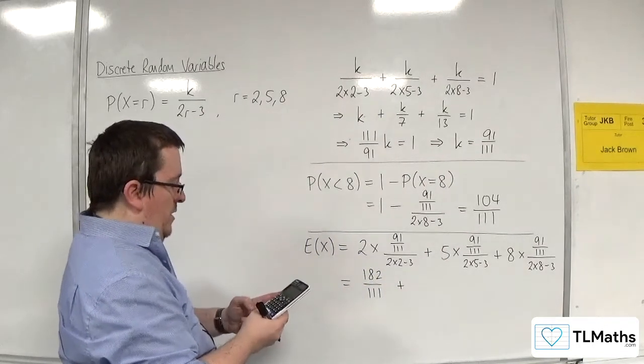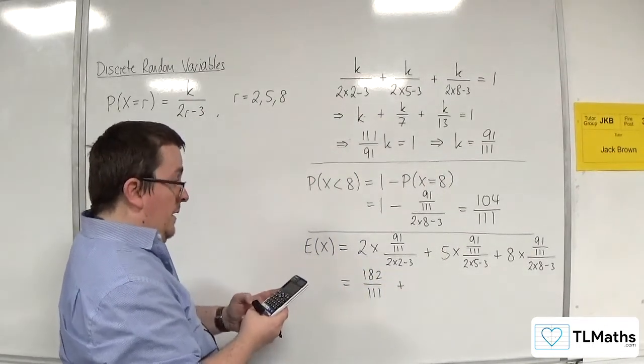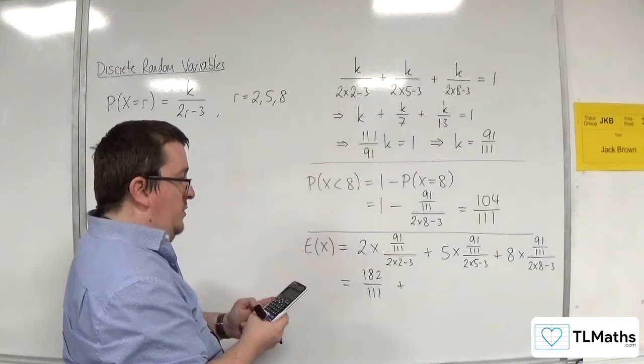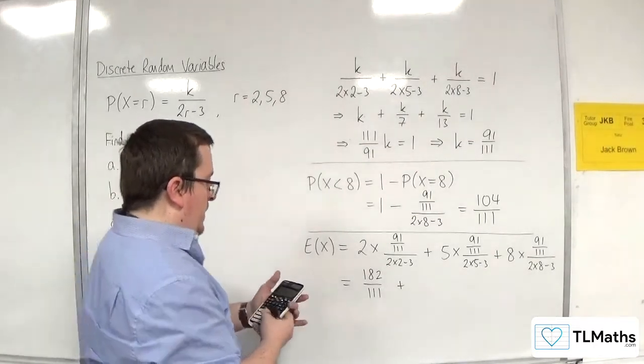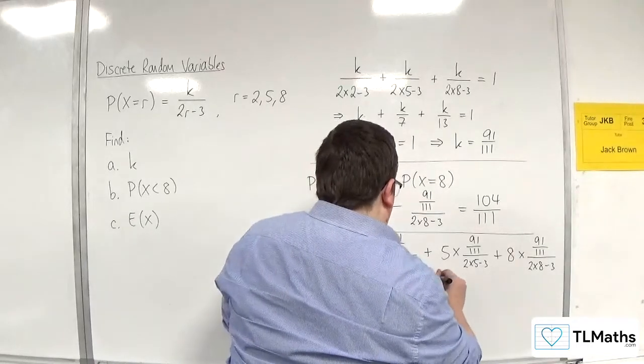Then 5 times 91 over 111, divided by 2 times 5 take away 3, so divided by 7. And we get 65 over 111.